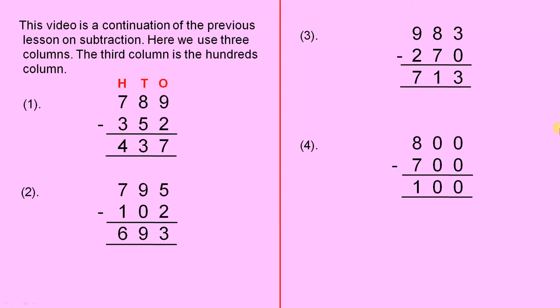This video is a continuation of the previous lesson on subtraction. Here we use three columns. The third column is the hundreds column. So we have the ones column, O for ones,